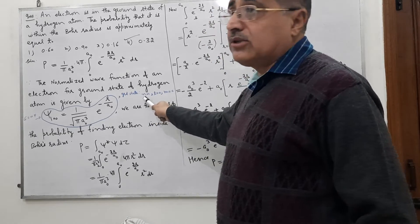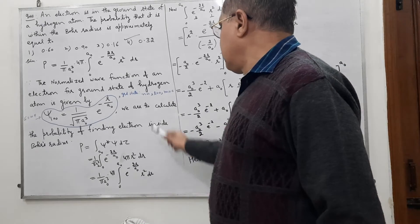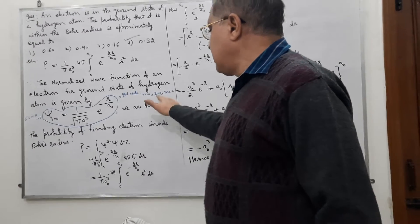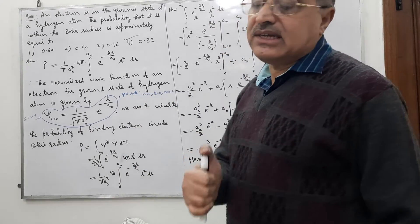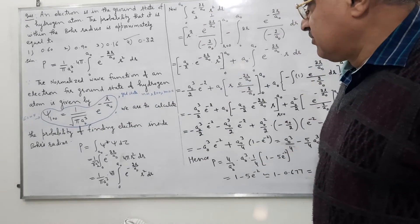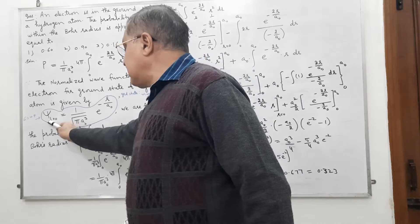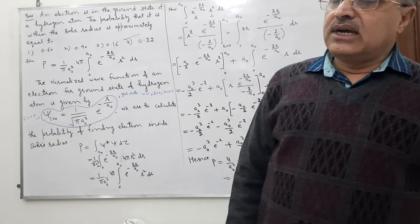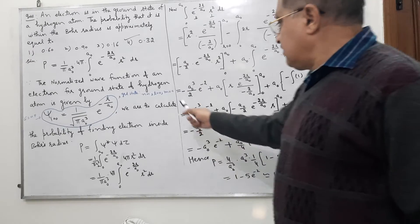The ground state of the hydrogen atom corresponds to quantum numbers: principal quantum number N, orbital quantum number L, and magnetic quantum number M. In the ground state: N is 1, L goes from 0 to N−1 so L is 0, and M goes from −L to L so M is 0. These are the quantum numbers for the ground state.